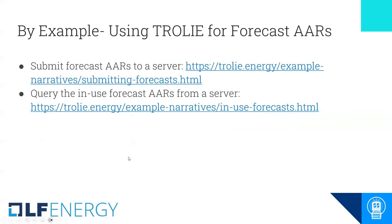I'm going to walk through some concrete examples of the basic things: submitting your forecast AARs to a server, and querying back in-use ones if there's any chance your reliability coordinator is operating against different ratings. These can be found in the usage examples. Going to submitting forecast ratings — this is broken up into a couple of sections. There are headers, a concept added recently intended to provide hints.